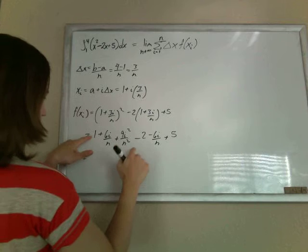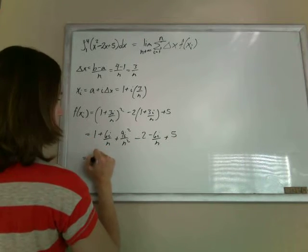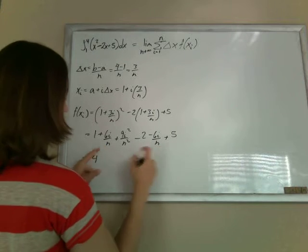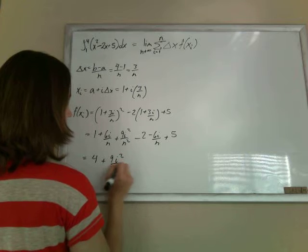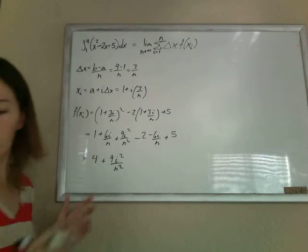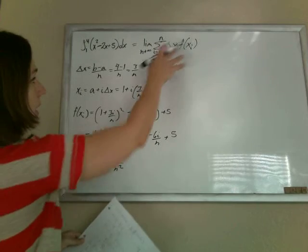Now, cleaning this up, 1 minus 2 plus 5 is 4. The 6i over n and the minus 6i over n cancel out, which is very nice. Plus 9i squared over n squared. So now we have that, and we're ready to plug it into this.